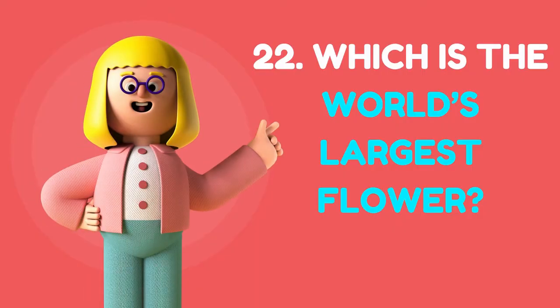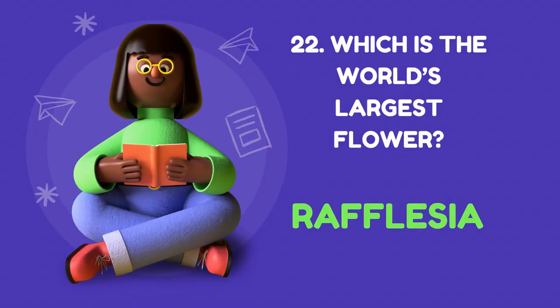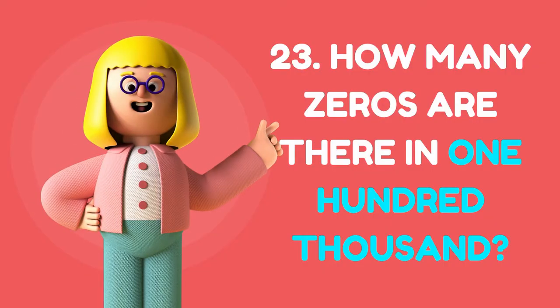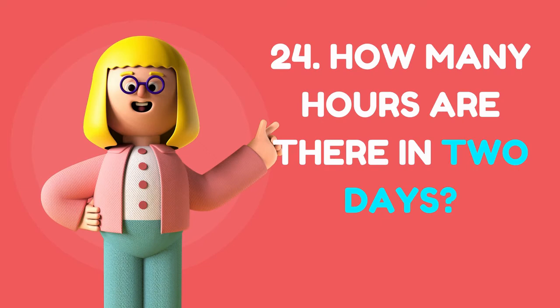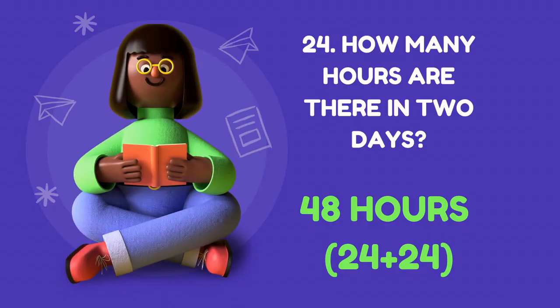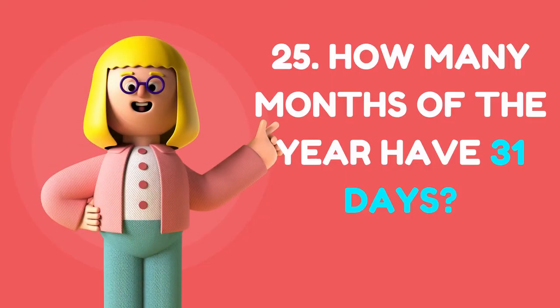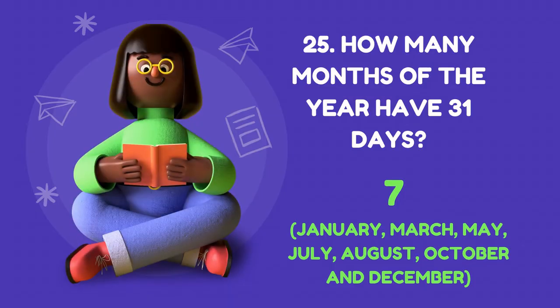Which is the world's largest flower? The answer is Rafflesia. How many zeros are there in 100,000? The answer is five. How many hours are there in two days? The answer is 48 hours. How many months of the year have 31 days? The answer is 7.